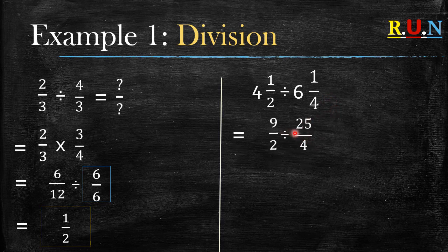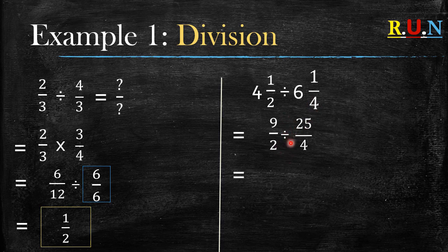To get the improper fractions, start with the first part: 4 times 2 plus 1 equals 9, so you have 9 as the numerator over 2, because the denominator does not change. For the second part, 6 times 4 plus 1 equals 25, so that's 25 over 4, because there was already 4 as a denominator.